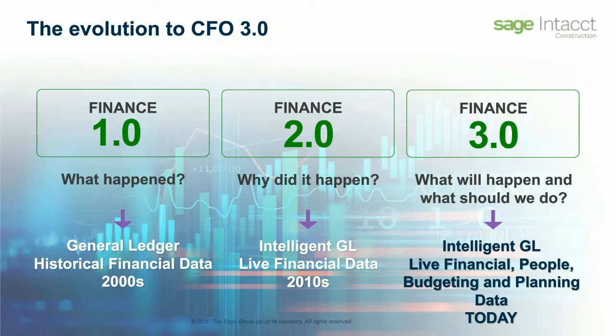This is already happening. About 70% of all transactions are already being created through our open API, meaning transactions are coming in electronically through other computing systems — no data entry for those transactions. Customers are already able to focus on the exceptions rather than the day-to-day creation of transactions, and we're working on ways to further eliminate even more manual work.